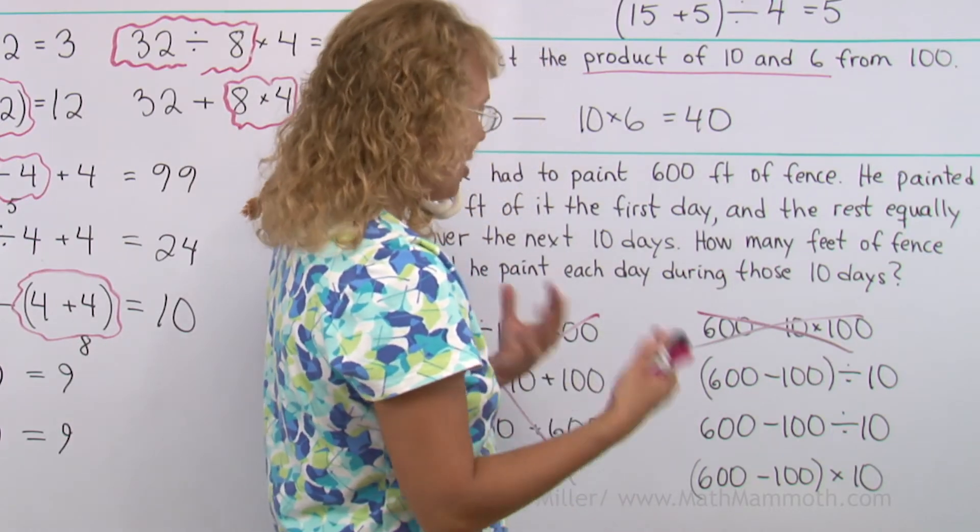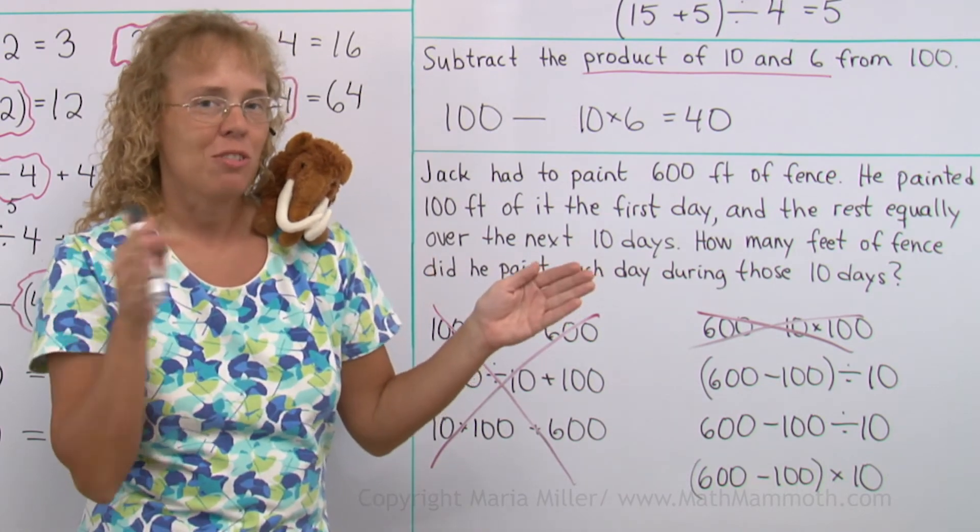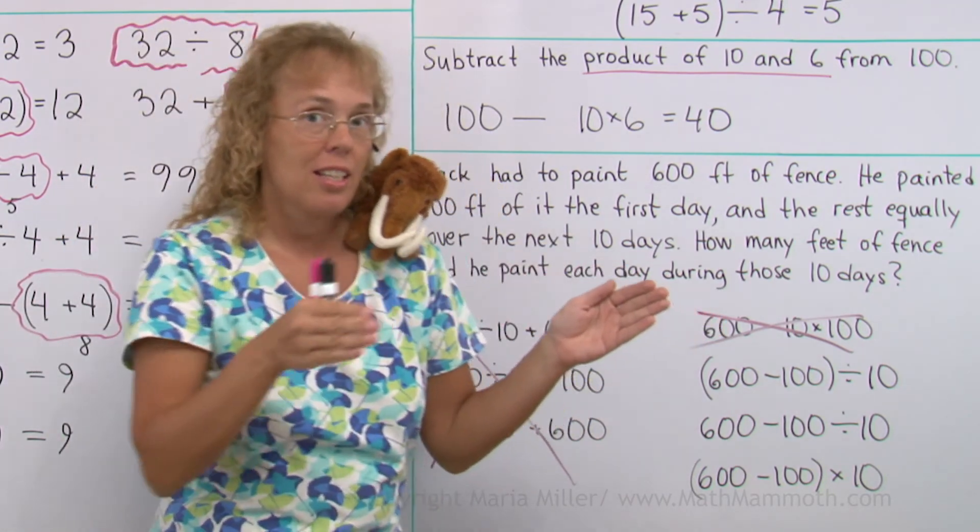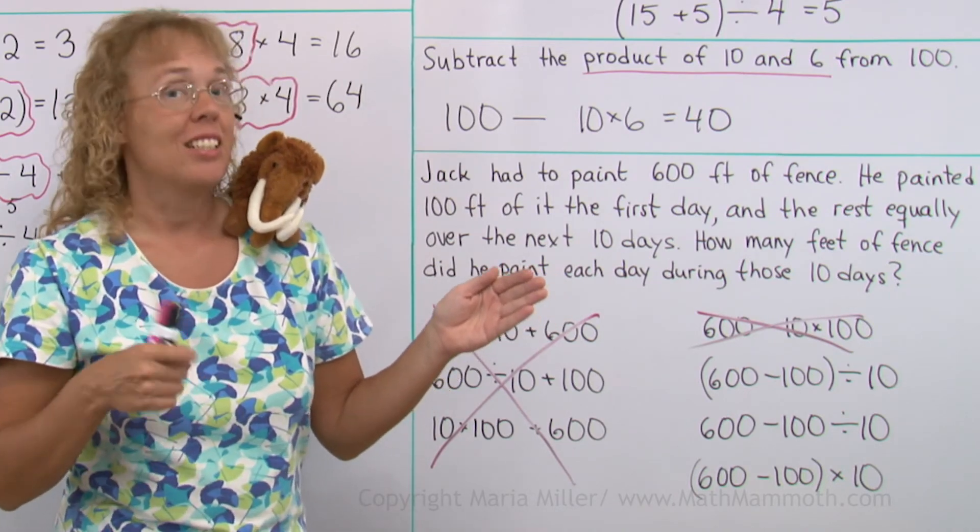And after you subtract, then what do you do? You have 500 feet over 10 days, so you should divide, right? Divide that by 10. So we need to have subtraction, then division.